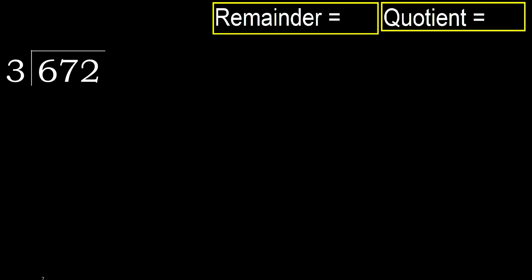672 divided by 3. 6 is not less, therefore with 6: 3 multiplied by which number is nearest to 6 but not greater? 3 multiplied by 3 is 9, 9 is greater. Multiplied by 2: 6 is not greater. Ok, subtract: 6 minus 6 is 0.